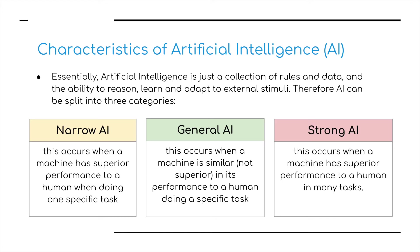There are three different characteristics of Artificial Intelligence. Essentially, AI is just a collection of rules and data, and the ability to reason, learn, and adapt to external stimuli by the computer. AI can be split into three different categories. First, Narrow AI — this occurs when a machine has superior performance to a human when doing one specific task. General AI — this occurs when a machine is similar, not superior, in its performance to a human doing a specific task. And Strong AI — this occurs when a machine has superior performance to a human in many tasks.